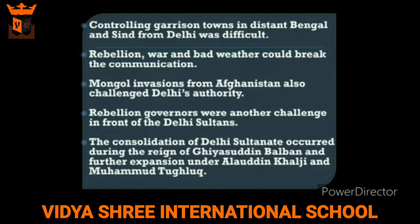The governors of the Delhi Sultanate also believed that Delhi's Sultanate was not capable of removing them, so they tried to assert independence. The consolidation of the Delhi Sultanate occurred during the reign of Ghiyasuddin Balban, and further expansions took place under Alauddin Khalji and Muhammad Tughlaq.